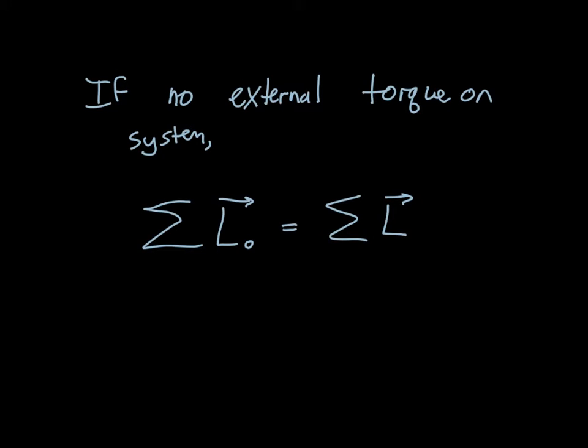One more piece: if we have a system with no external forces causing a torque on the system, then the angular momentum at some initial moment in time will equal the angular momentum at some later time. That is, the total angular momentum is conserved. Angular momentum for individual objects within the system can absolutely change, but the total will remain constant unless there is an external torque.